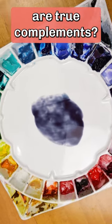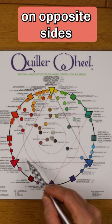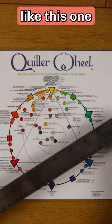How do you know if two colors are true complements? Number one, they will be positioned on opposite sides of an accurate color wheel like this one.